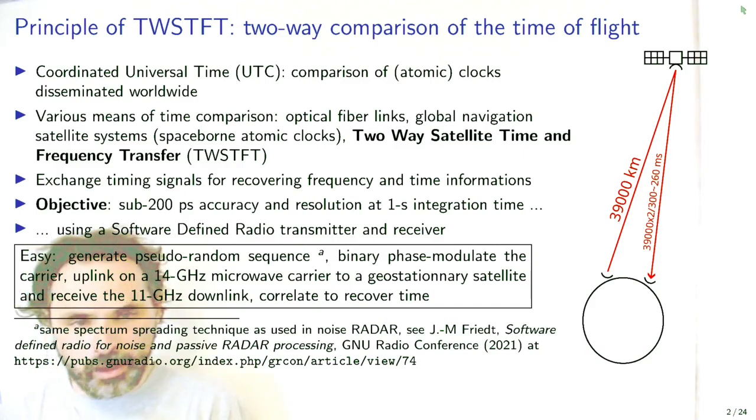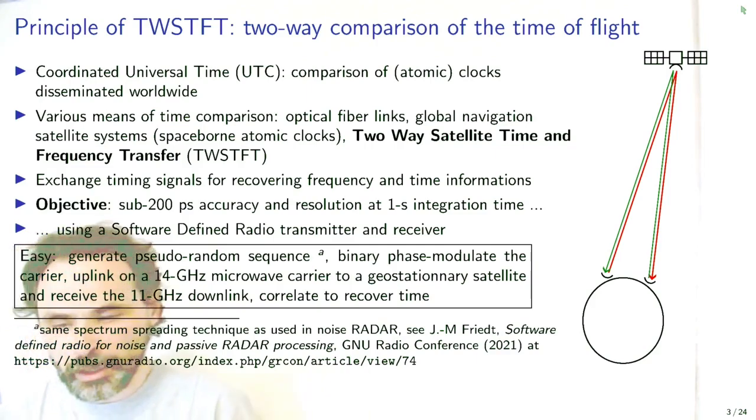So the objective is to contribute in the development of Coordinated Universal Time, UTC, by providing means for comparing clocks in complement to current optical fiber or common view GNSS measurements. In this case, we wish to send information from one observatory to a geostationary satellite that will broadcast the information back towards Europe or North America. Because of the speed of light, this link will take something like 260 milliseconds to go from ground to satellite to ground.